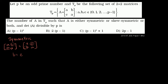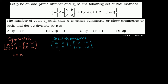Skew symmetric means a matrix equals the negative of its transpose. So [[a,b],[c,a]] equals [[-a,-c],[-b,-a]]. This means A must equal negative A, so A has to equal 0 — the only number that equals its own negative. It also means B must equal negative C.